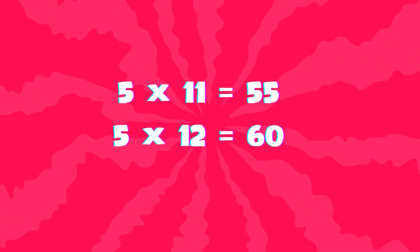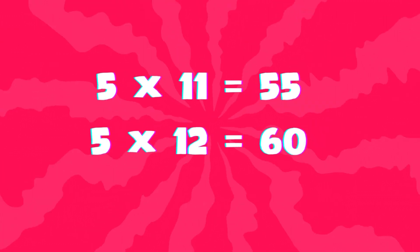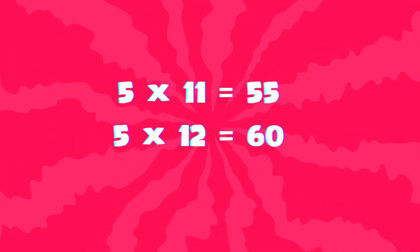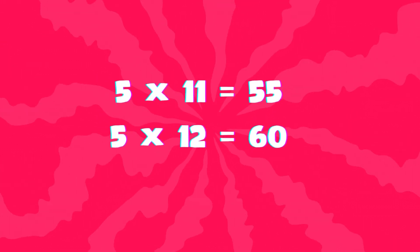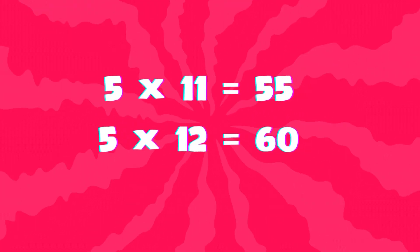5 times 11 is 55, keep the rhythm in your stride. 5 times 12 is 60, now we're dancing with pride. So when you need to multiply, just remember the groove. With the 5's in your mind, you'll always make a move.